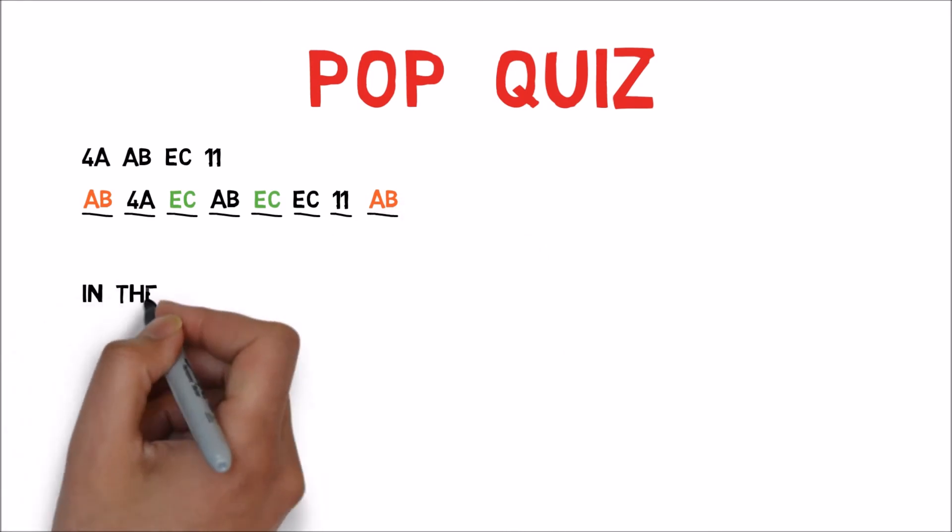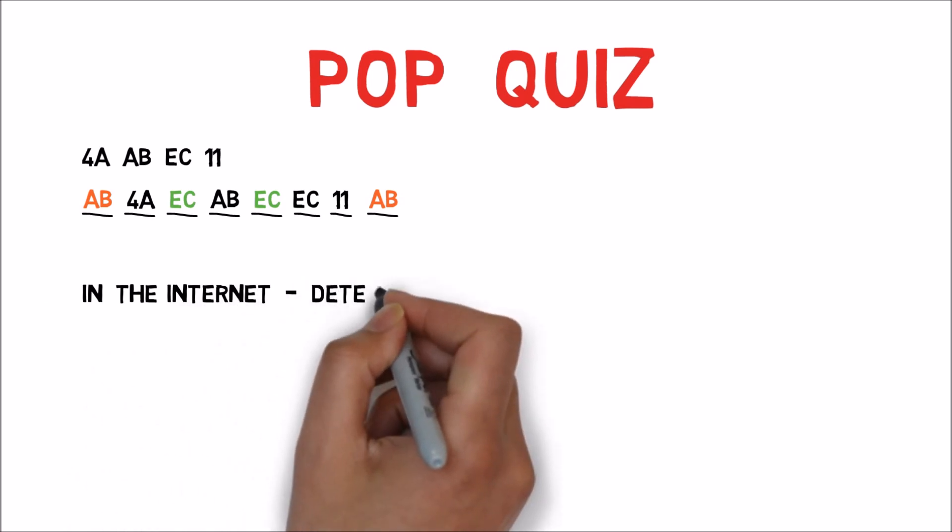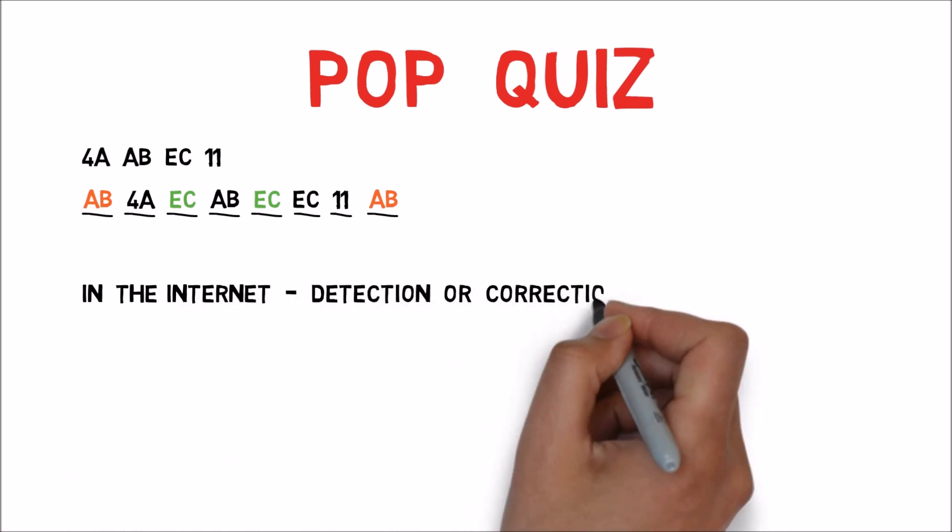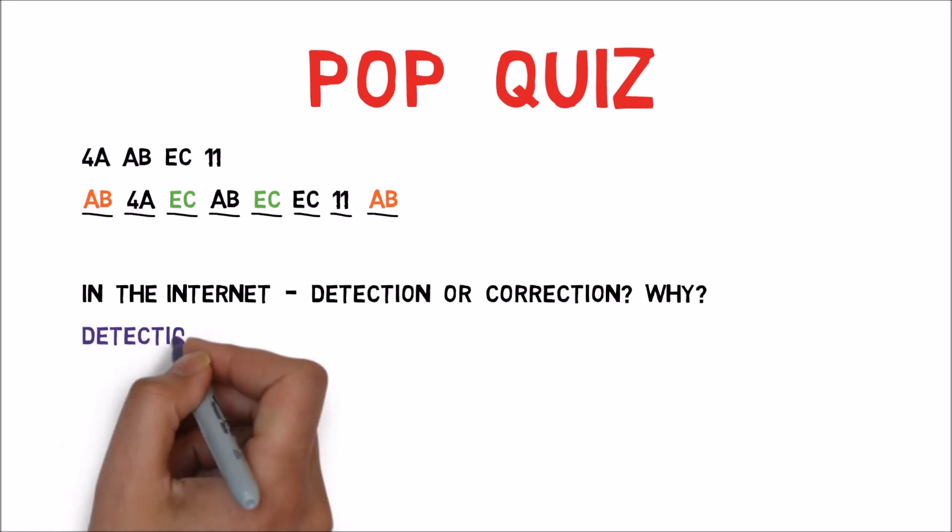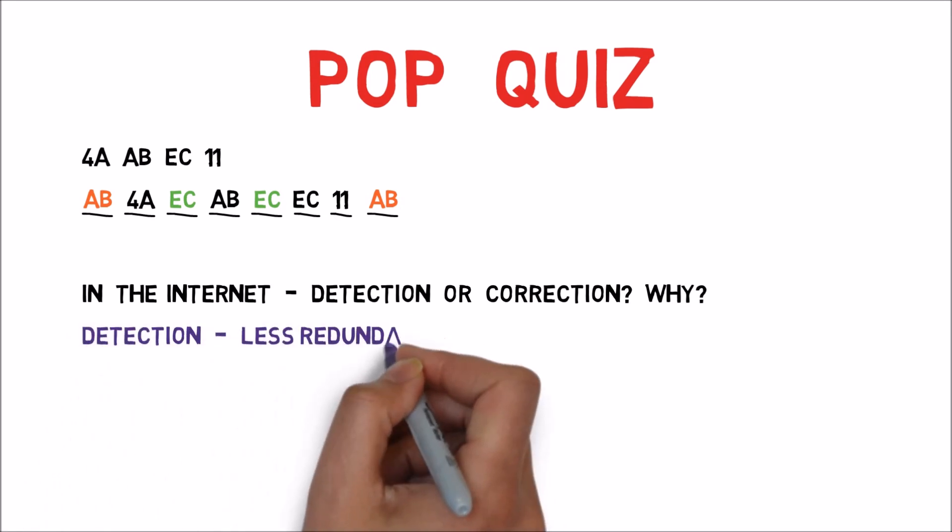Next question: what do we use in the internet? Error detection or error correction? Why? Well, we use detection since it is simpler and we send less redundant data.